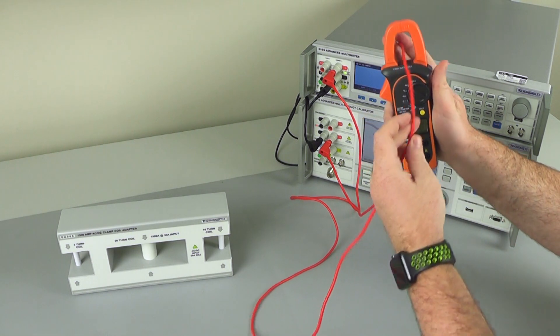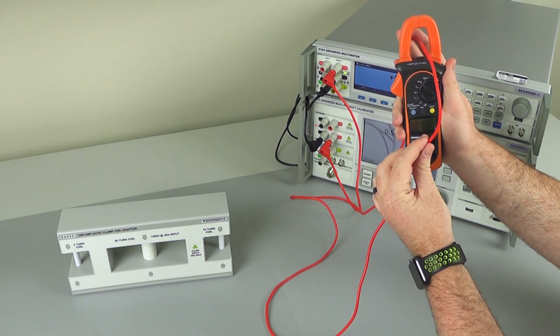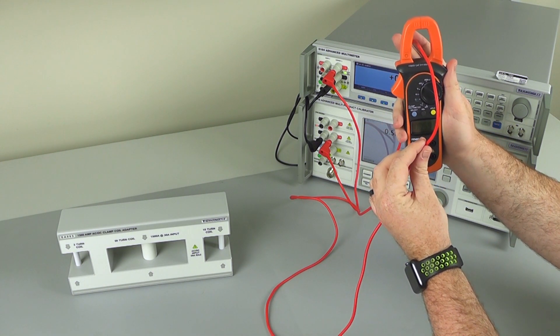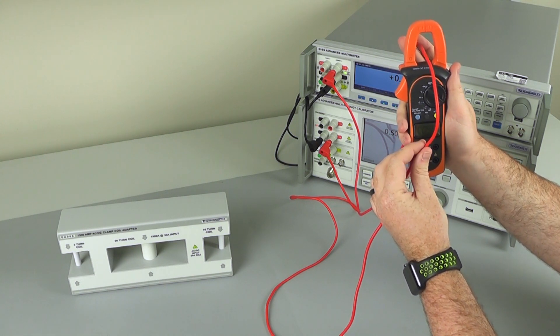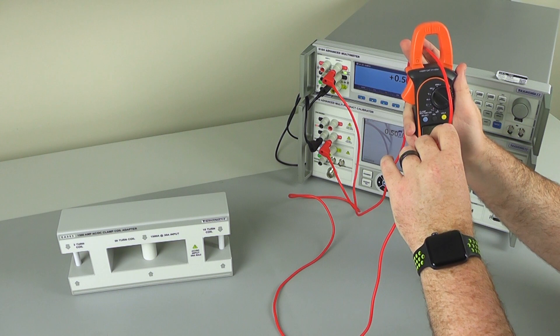So effectively, all a clamp coil adapter is doing is passing more turns through the jaws of the clamp. So with this single wire, it's very easy to demonstrate.